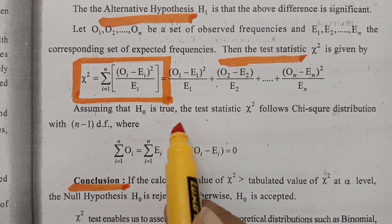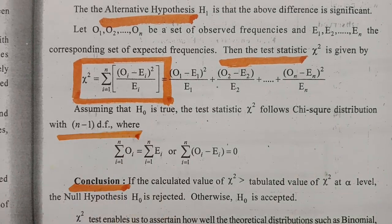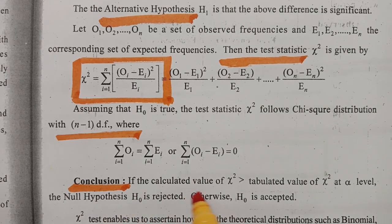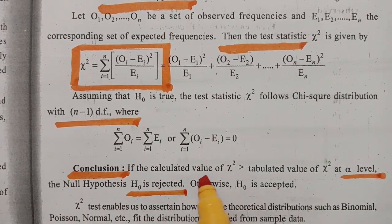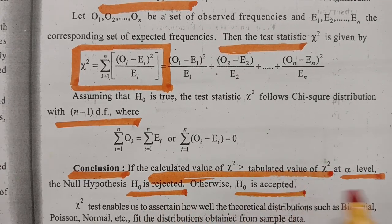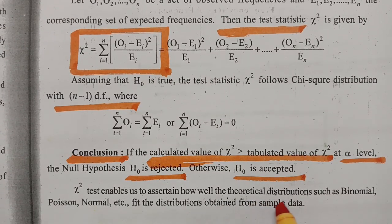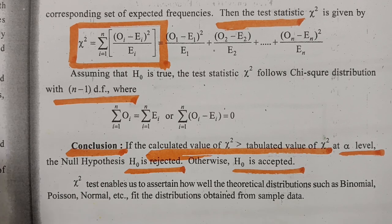Assume that H0 is true. The test statistic follows the chi-square distribution with N minus 1 degrees of freedom. The conclusion: if the calculated chi-square value is greater than the table value at alpha level, the null hypothesis is rejected. If the calculated value is less than the table value, we accept. The chi-square test enables us to ascertain how well theoretical distributions such as binomial, Poisson, or normal fit the distribution obtained from the sample.